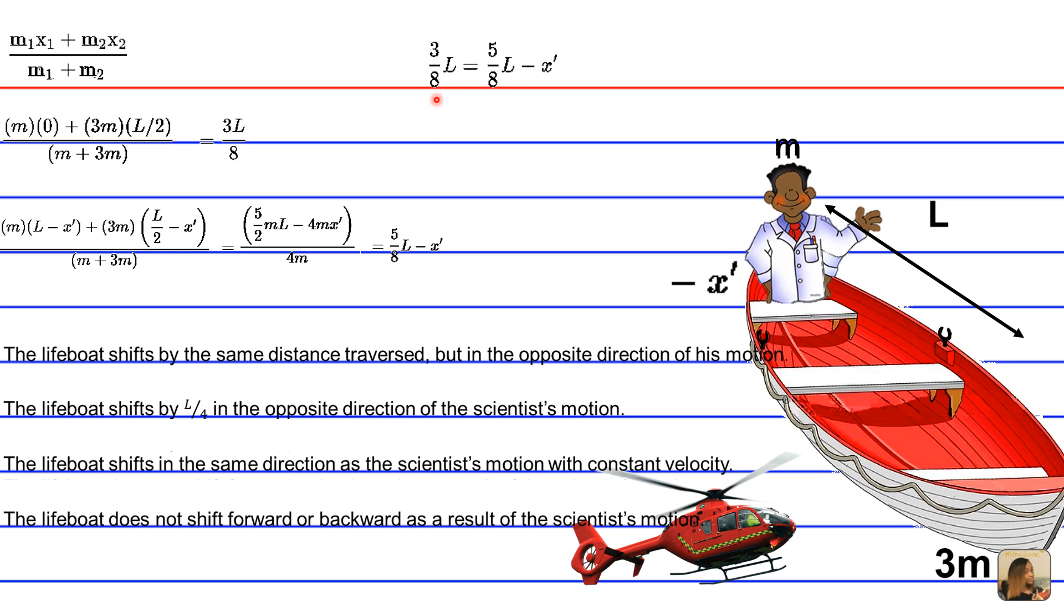So we set them equal to each other. And now we're going to simplify. And that is going to yield x prime as equivalent to L over 4.